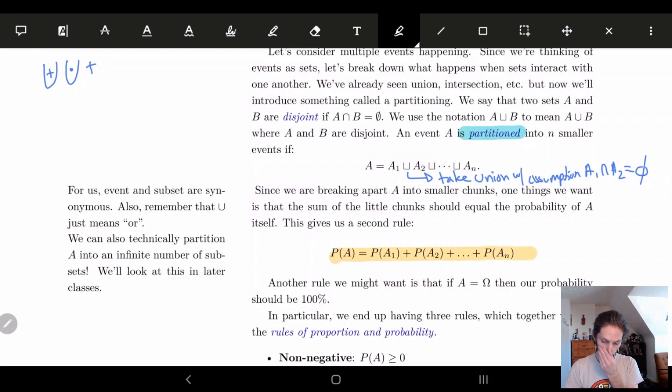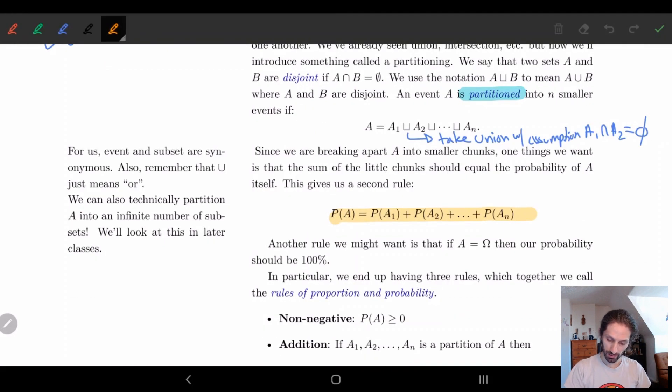So a thing to remember is while we're here, is that our sets don't necessarily have to be finite, right? So we could do this with an infinite number of things. I know here we're making N, so we're kind of making it look like it should be finite, but I can make N be infinite if I want. So I can just take an infinite number of things. We just really want that the sum of the probability should sum up to everything.